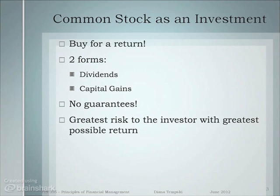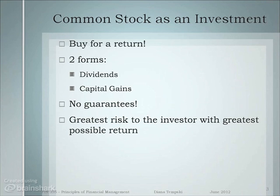Why does somebody buy common stock as an investor? Most people buy it for a return. The returns an investor sees with common stock come in two forms: the first is dividends and the second is capital gains. There are no guarantees for either. There's no guarantee for dividend payments, and firms' dividend policies can change. There's no guarantee for a promised future stock price when you want to sell. Common stock represents the greatest risk to the investor, but also the greatest possible return — always a correlation between risk and return.